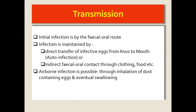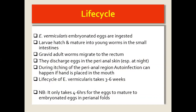How is it transmitted? Initially it is transmitted via the fecal-oral route — either directly by somebody touching the infected eggs from the anal region and then putting it in the mouth, or indirectly where food or clothing has been contaminated by these eggs and then end up in your system. Sometimes it can be airborne, where eggs in dust are blown up and eventually swallowed.